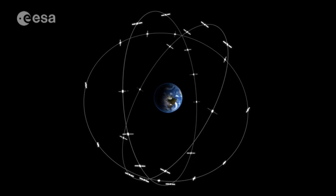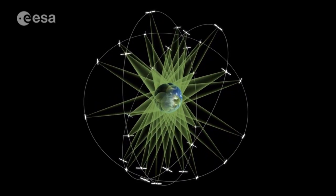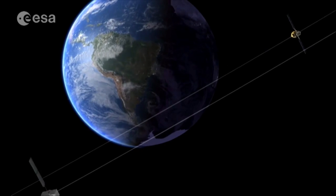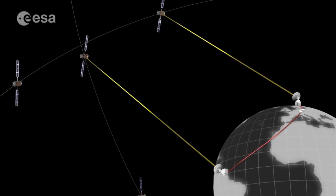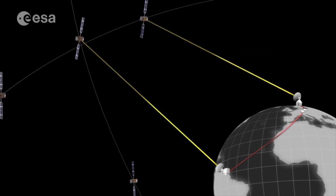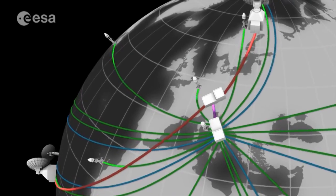Galileo, Europe's very own 30-strong satellite constellation project, is now well underway with 12 satellites already in orbit. When complete, Galileo will give the world a new and innovative choice in global satellite navigation.